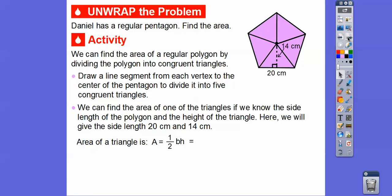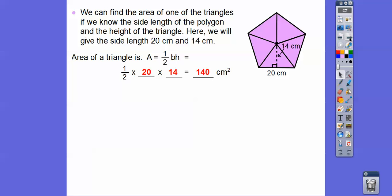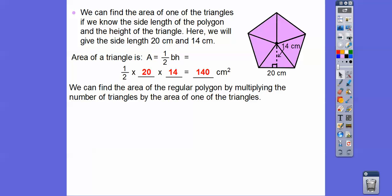So let's find the area of one of the triangles. Area equals one half times base times height. Substituting in: one half times 20 times 14. Half of 20 is 10, and 10 times 14 gives us 140 centimeters squared. Now we know the area of this one triangle is 140 cm². We can find the area of the whole polygon by multiplying by the number of congruent triangles.